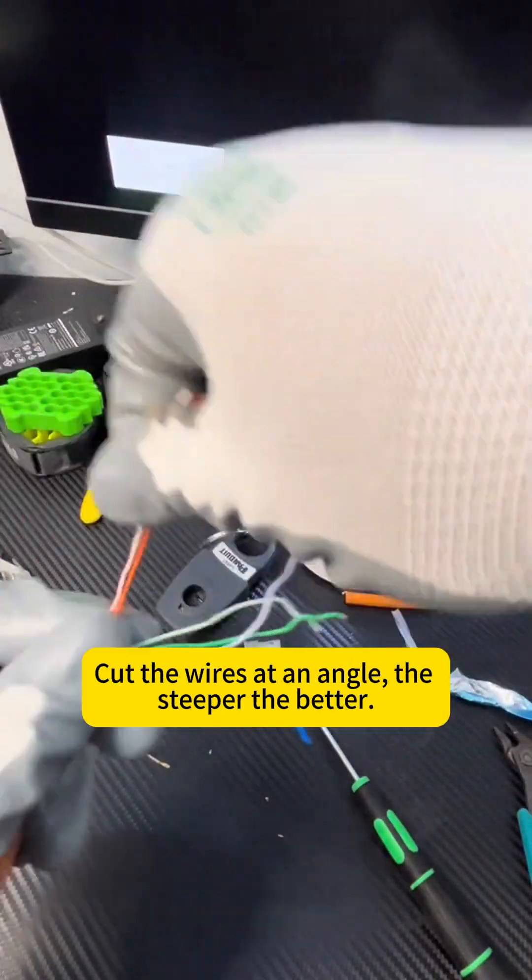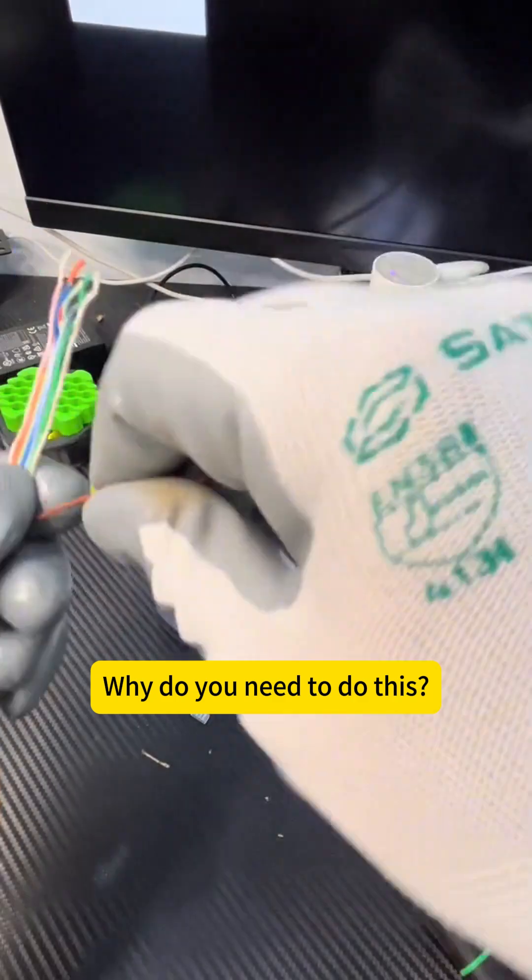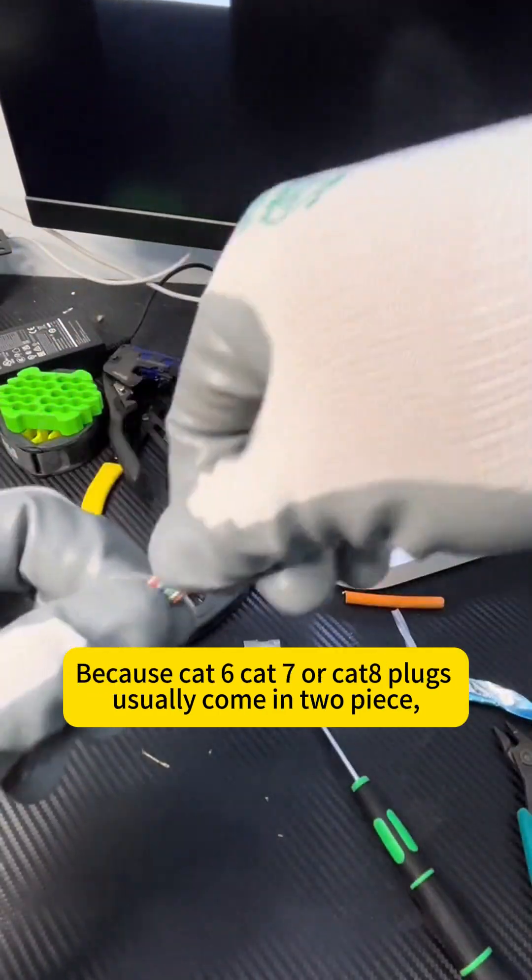Now comes the most difficult step. Cut the wires at an angle. The steeper, the better. Why do you need to do this? Because CAT6, CAT7, or K8 plugs usually come in two-piece, three-piece, or even five-piece designs.